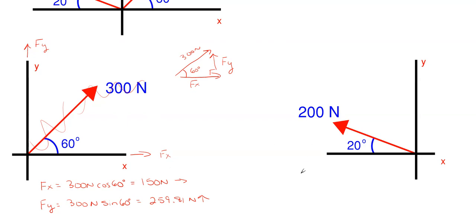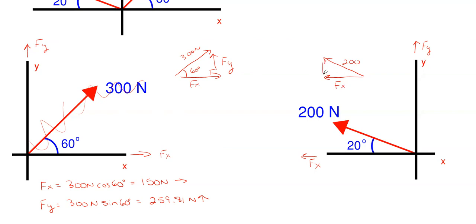Now we repeat the same process for the 200 newtons. Since the 200 newtons is going up and to the left, the Fy will be going upward and the Fx will be going to the left. Just like the triangle for the 300 newtons, we have the same setup here — the 200 newtons as the hypotenuse, with Fx and Fy completing the triangle.